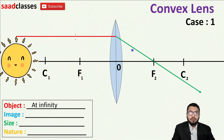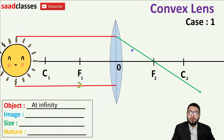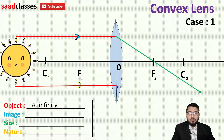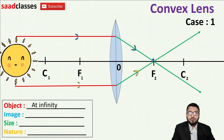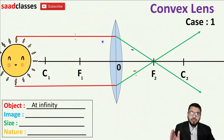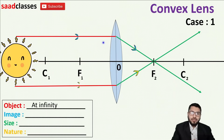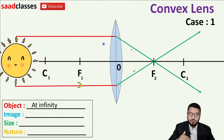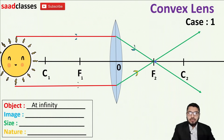To form an image I need minimum two rays, so I will take another ray parallel to the principal axis — because all rays coming from infinity are parallel. The same rule applies and it will pass through focus. Now these two image rays are cutting at F. The red rays are before refraction and the green rays are after refraction — take care of this nomenclature throughout this video. They are cutting at focus, so the image is formed at focus.